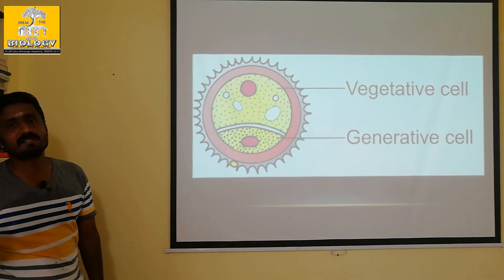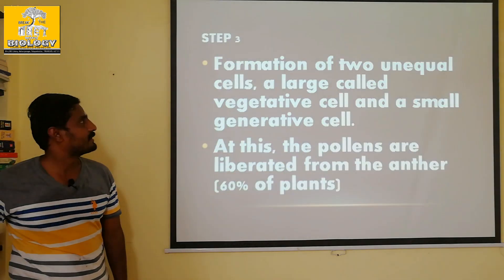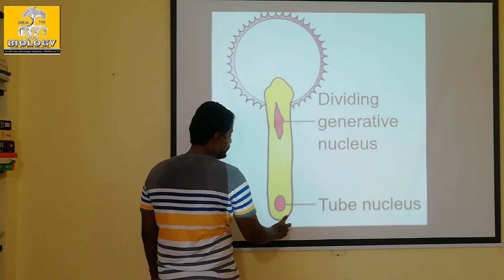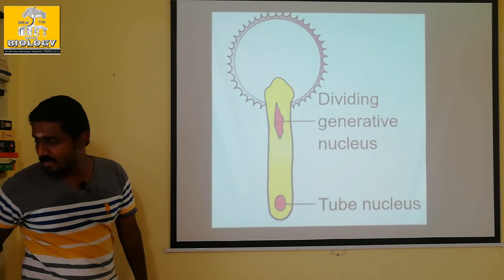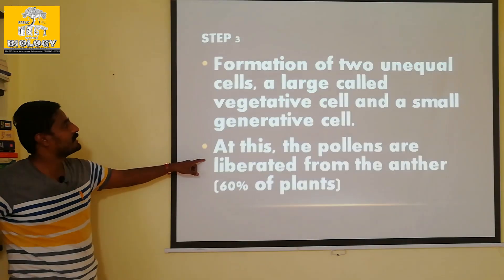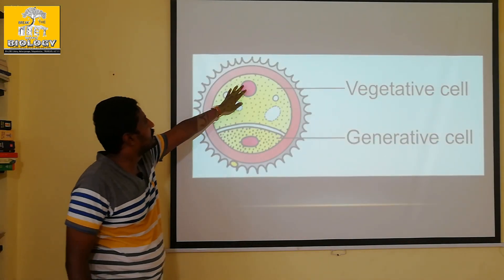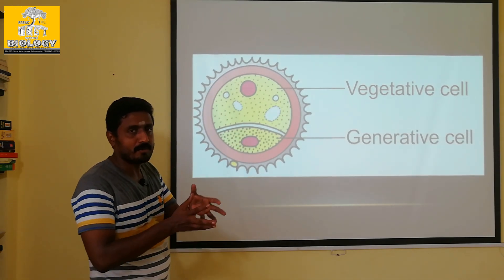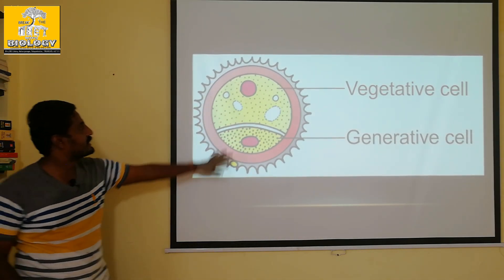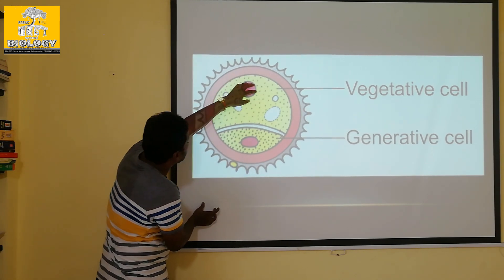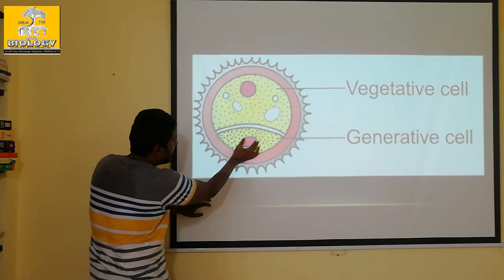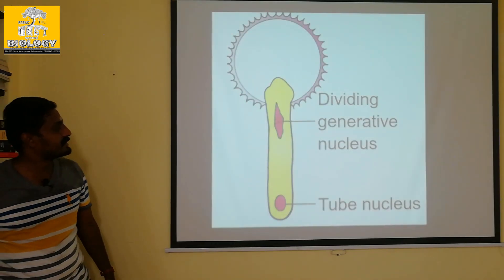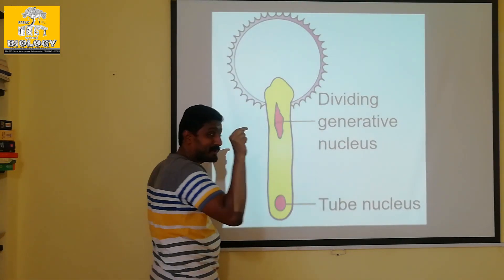In the fourth step, 60% of the plant, the tube is formed. If you look at the tube, you can see the germ pore. We introduce a tube nucleus on the tube.